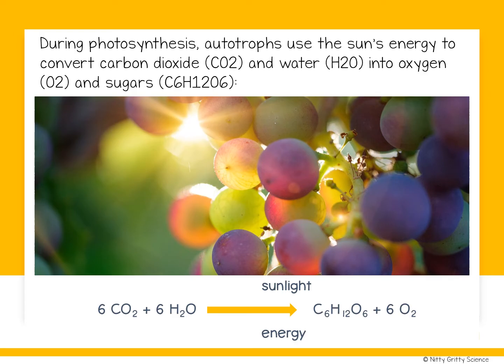Now, during photosynthesis, autotrophs use the sun's energy to convert carbon dioxide and water into oxygen and sugars. But it is a little bit more complex and it is a two-stage process. Think of it like making a cake, for example. The first stage is to combine the ingredients to make the batter, and then you move on to the second stage, which is to bake that batter. And to get the desired result — the cake — both stages must occur in the correct order.